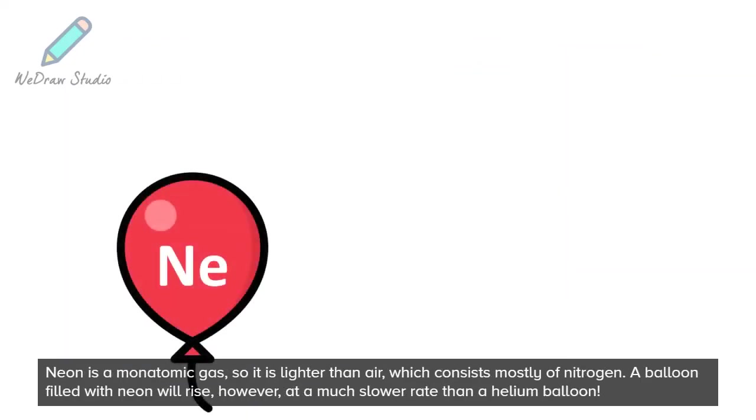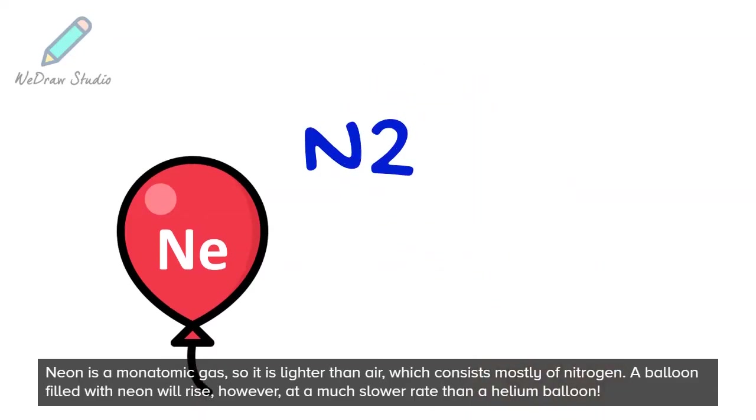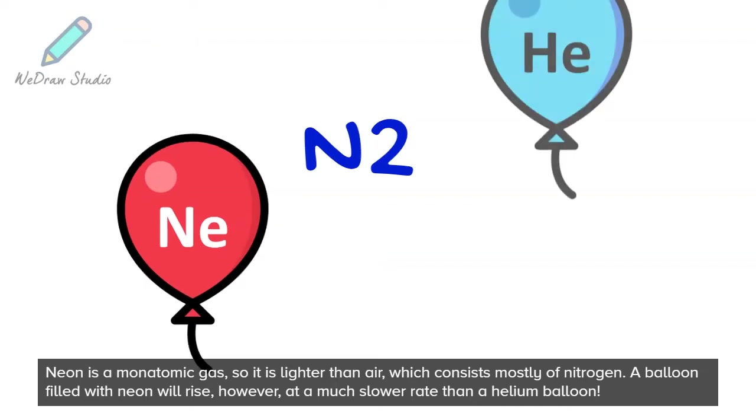Neon is a monatomic gas, so it is lighter than air, which consists mostly of nitrogen. A balloon filled with neon will rise, however, at a much slower rate than a helium balloon.